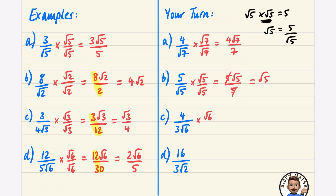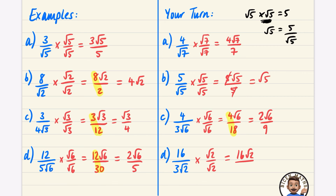Multiply by root six over root six: the numerator is four root six, and the denominator is three times six, which is eighteen. Simplifying four over eighteen gives two over nine, so the answer is two root six over nine — that can't simplify further. The last one multiplies by root two over root two: numerator is sixteen root two, denominator is three times root two times root two, which is three times two equals six. Simplifying sixteen over six by dividing both by two gives eight root two over three. Check these on your calculator.